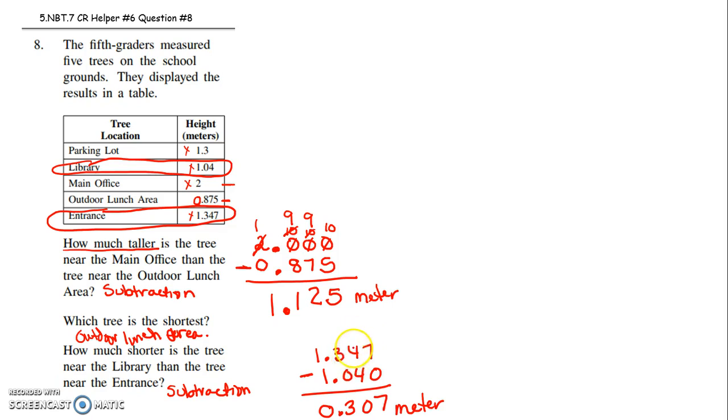I hope that helps. It's just about subtracting decimals and maybe comparing them. You just compare place value. If the ones place match, then you move to the tenths place. So for instance, here, the tree near the library is definitely shorter than the tree near the parking lot, because this has a 0 in the tenth, that still has a 3. Subtraction and comparing decimals, that's what that problem was about. I'll see you next time.